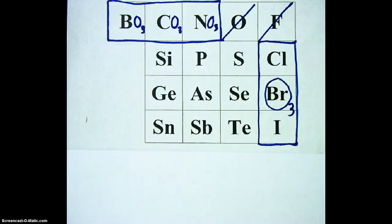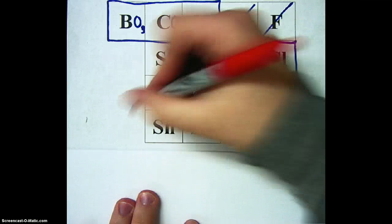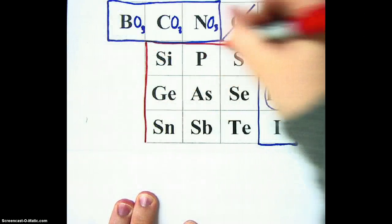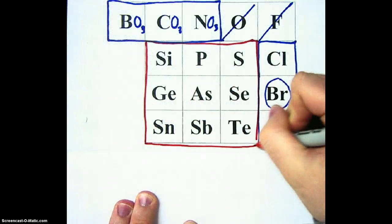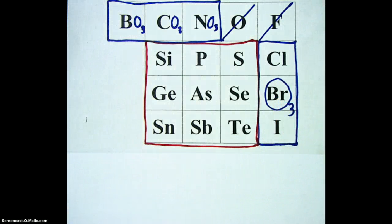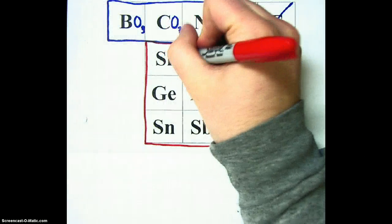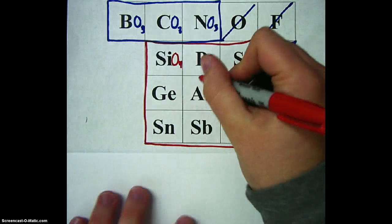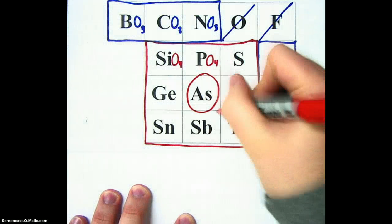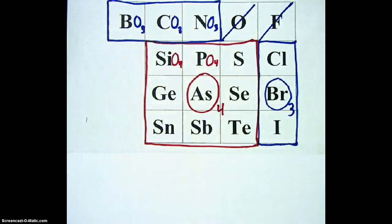Now I'm going to choose a different color and look at our remaining nine elements — I'm going to outline these nine elements. These nine elements will be similar in terms of the polyatomic ions that they form. They are going to have four oxygens, so SiO4, PO4, and so on. I'm just going to put a big O4 in the middle to indicate that each of these will have four oxygens after it when it forms a polyatomic ion.